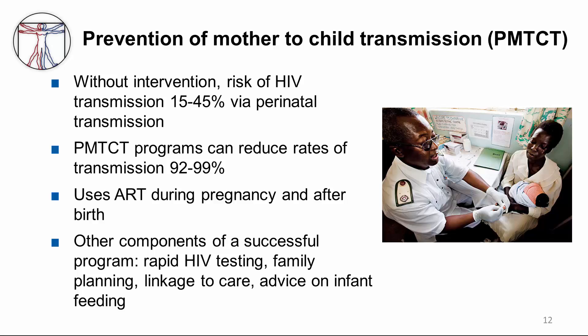What about prevention of mother-to-child transmission, or PMTCT? Without intervention, we know that the risk of HIV transmission is 15 to 45% via perinatal transmission. PMTCT programs can reduce rates of transmission by 92 to 99%, which is very dramatic. The program uses antiretroviral therapy during pregnancy and after birth. But there are other components of a successful program, including rapid HIV testing — because you'd want to know the status of mothers and if they're positive, offer them therapy — family planning, linkage to care, and advice on infant feeding, particularly the role of breastfeeding in this situation.